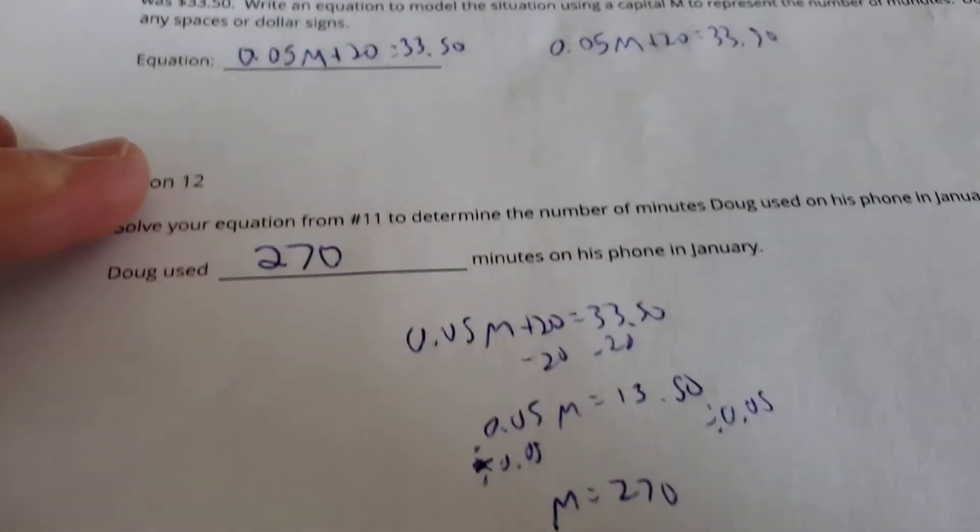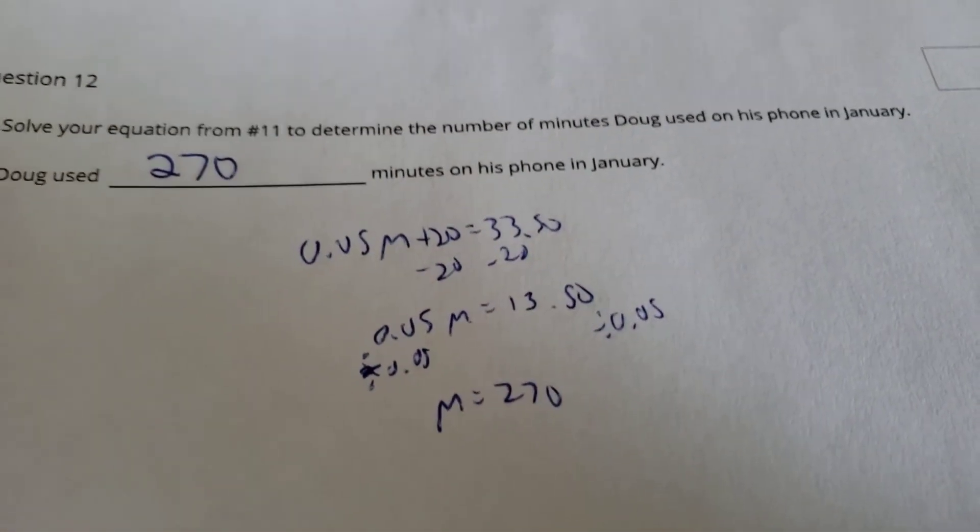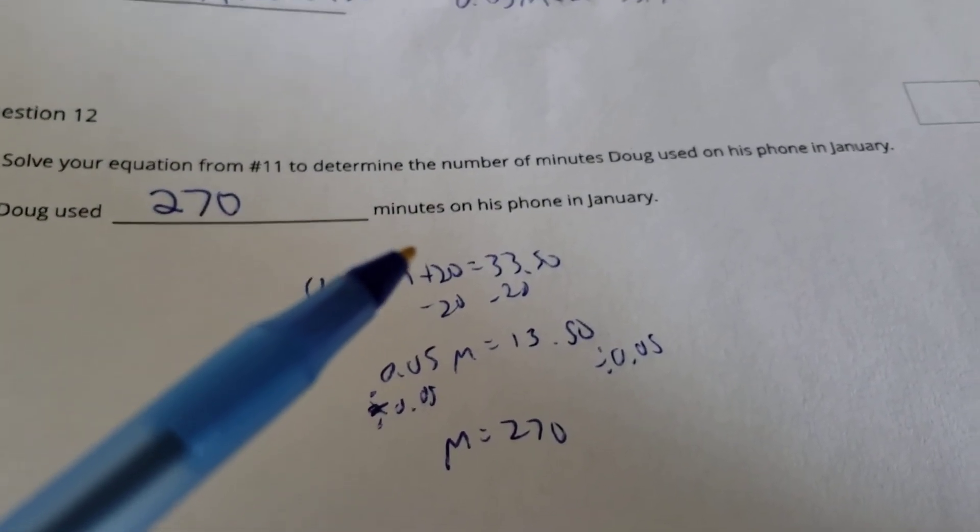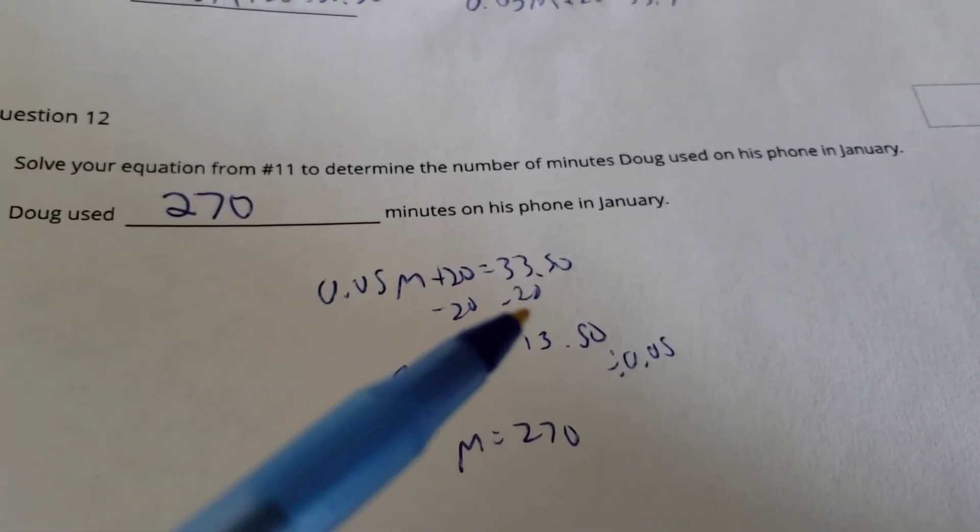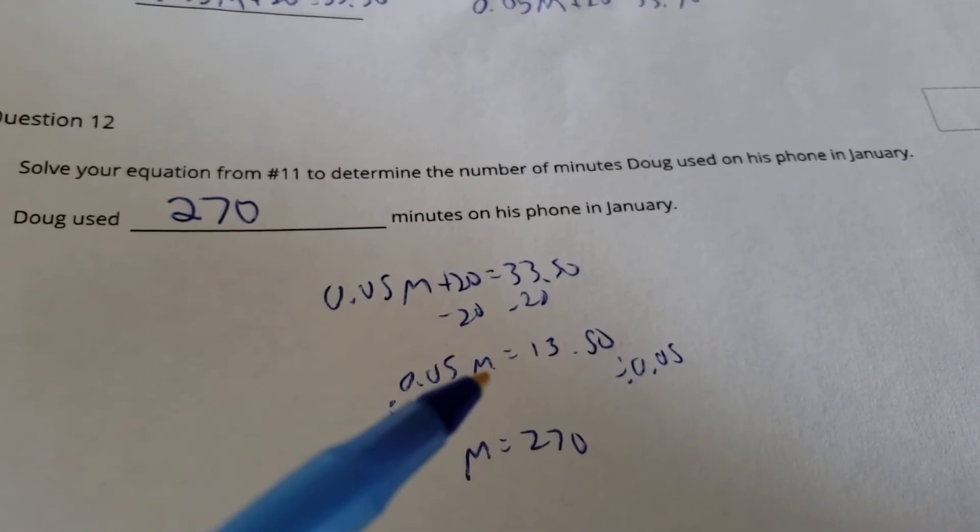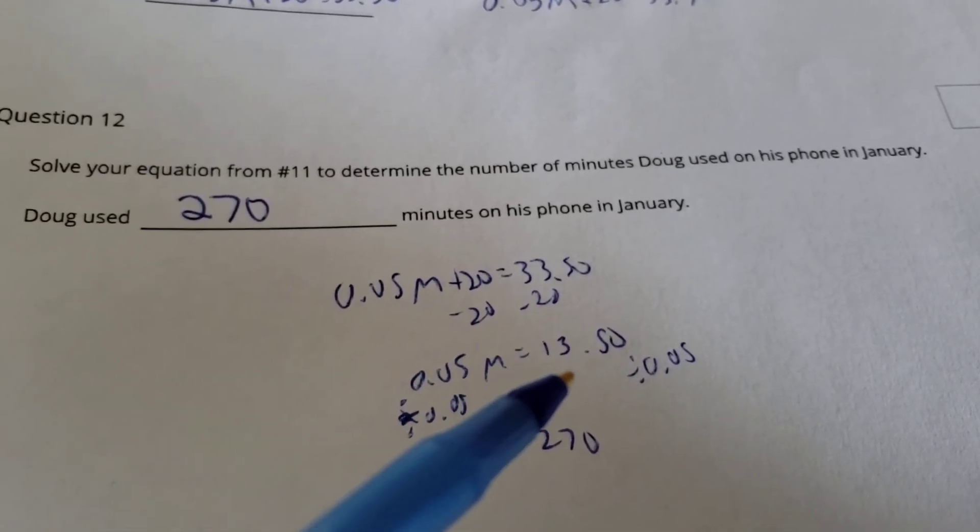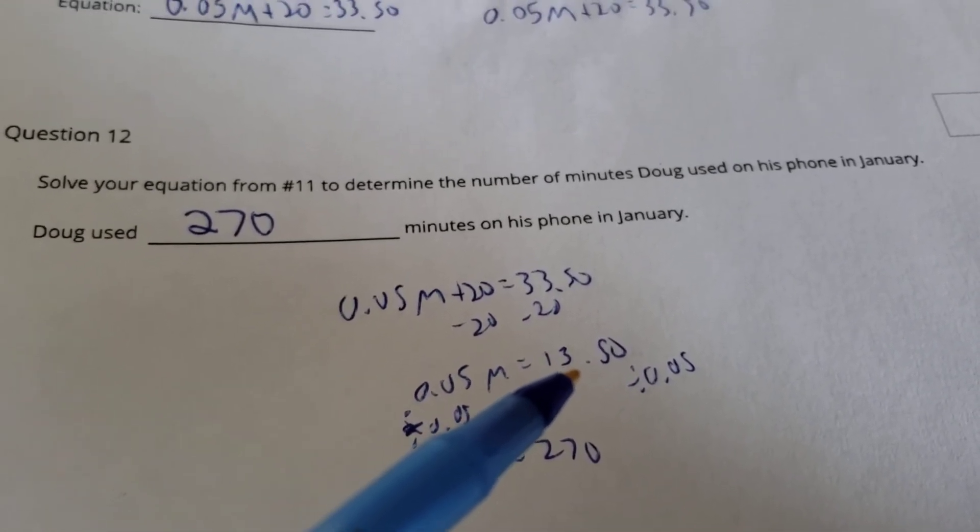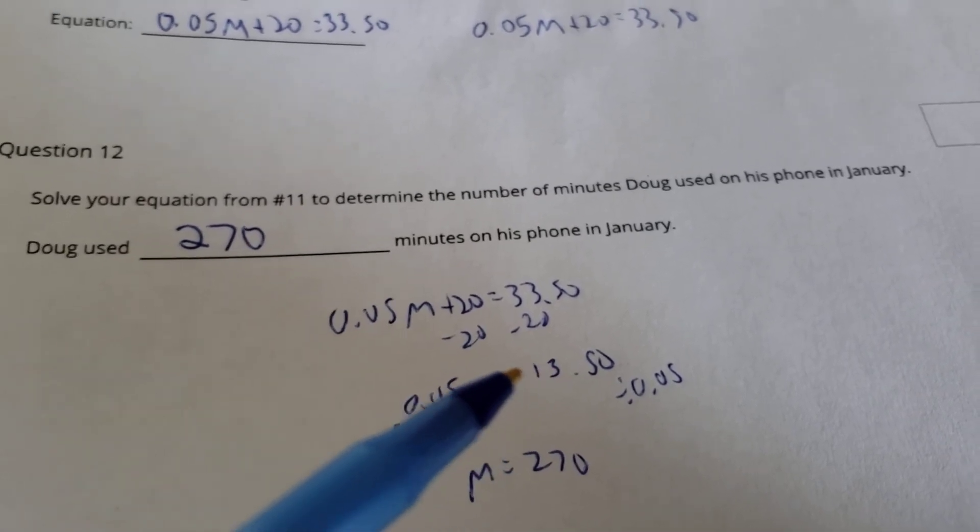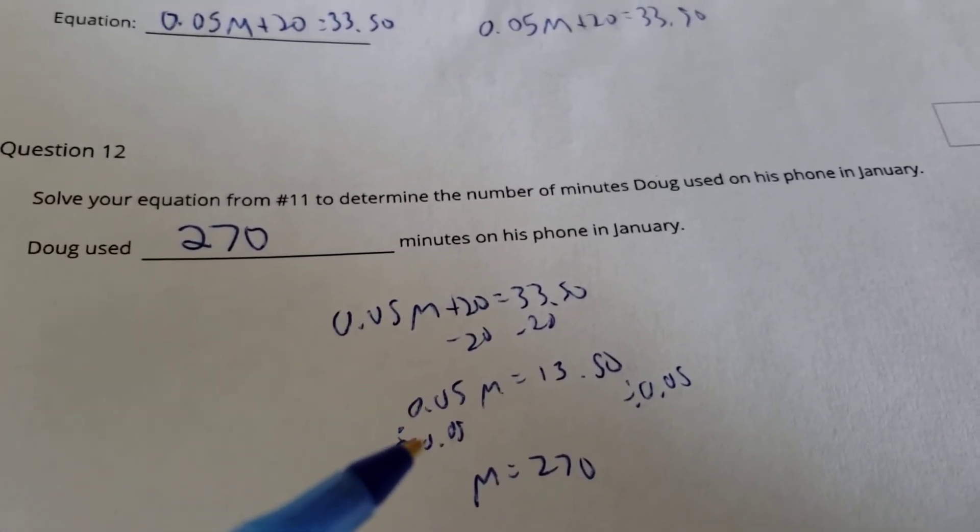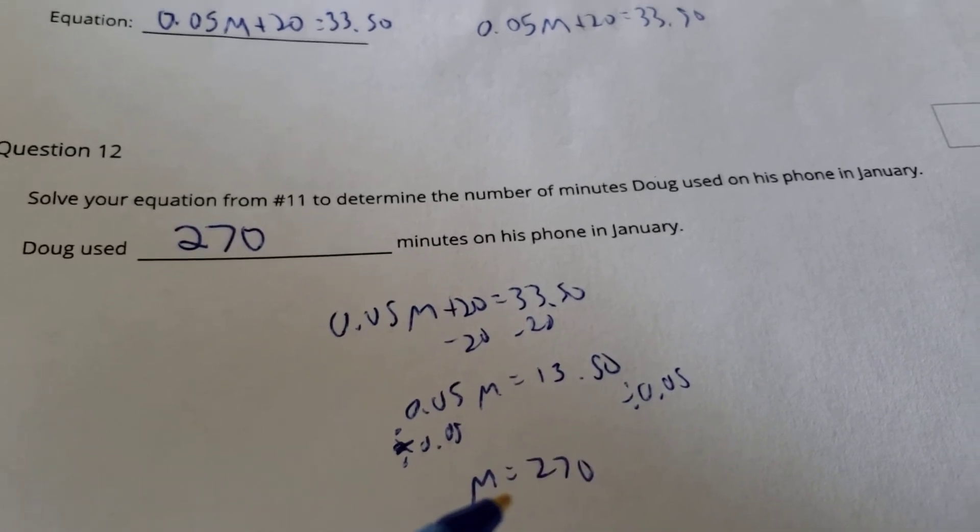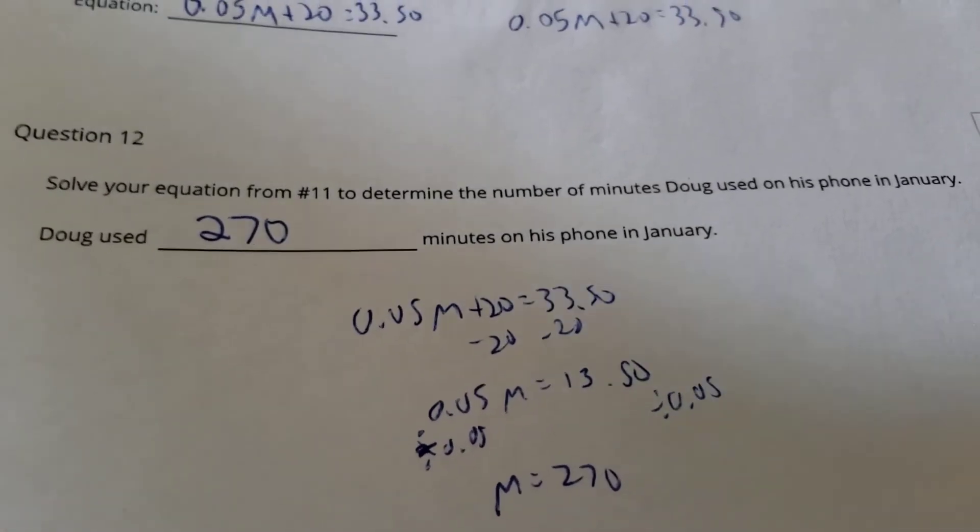If I wanted to go ahead and solve that, down in number 12, that's what they're asking us to do. I get rid of the plus 20 by minus 20 from each side. And 5 cents per minute means I spent $13.50 just talking on the phone once I got rid of that original $20 charge. So instead of times by 0.05, divide by 0.05 on each side, you get M equals 270 minutes.